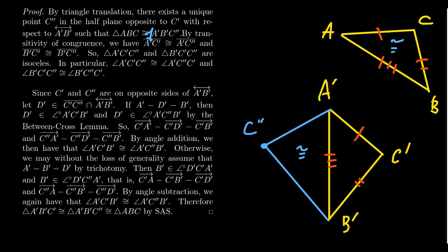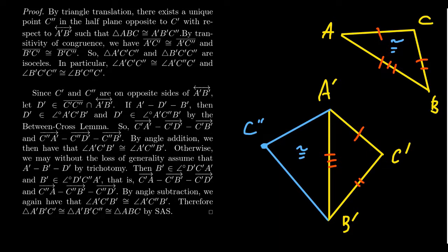As corresponding parts of congruent triangles are congruent, since triangle ABC is congruent to triangle A'B'C double prime, we have that segment AC is congruent to segment A'C double prime. But AC is already, by assumption, congruent to A'C prime. So by transitivity, A'C prime is congruent to A'C double prime. By similar reasoning, B'C prime is congruent to B'C double prime, again by transitivity of congruence.